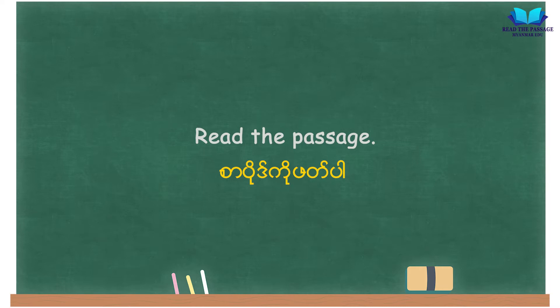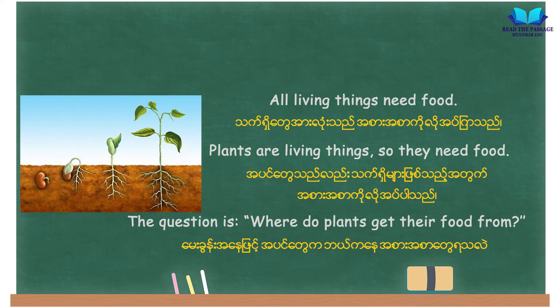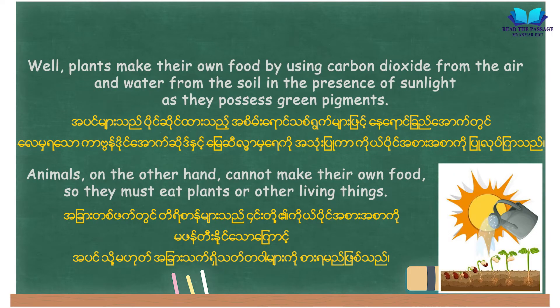Read the passage. All living things need food. Plants are living things, so they need food. The question is, where do plants get their food from? Well, plants make their own food by using carbon dioxide from the air and water from the soil, in the presence of sunlight, as they possess green pigments.